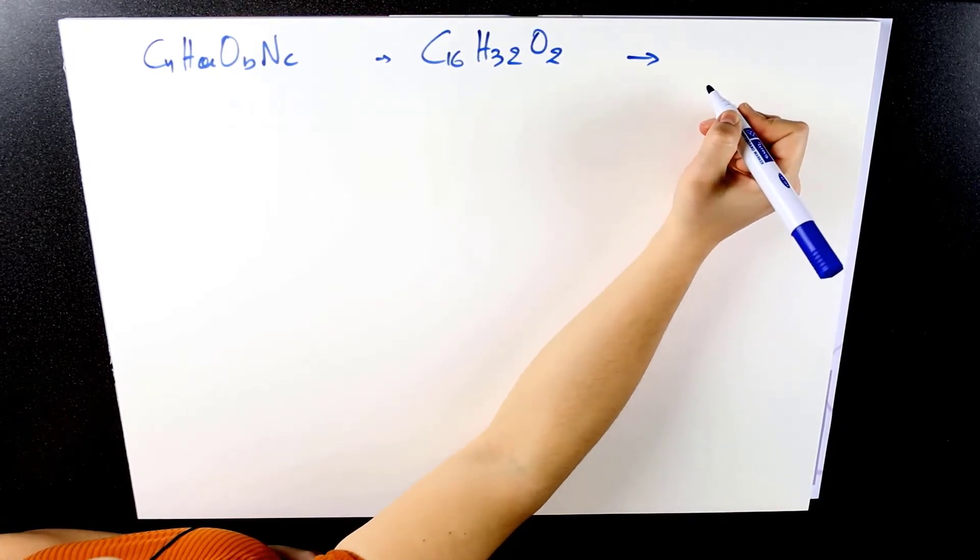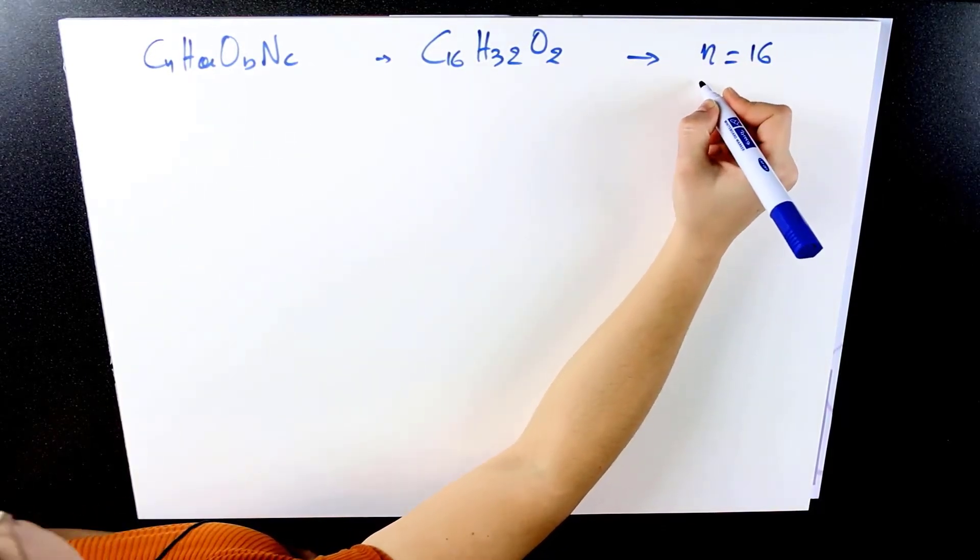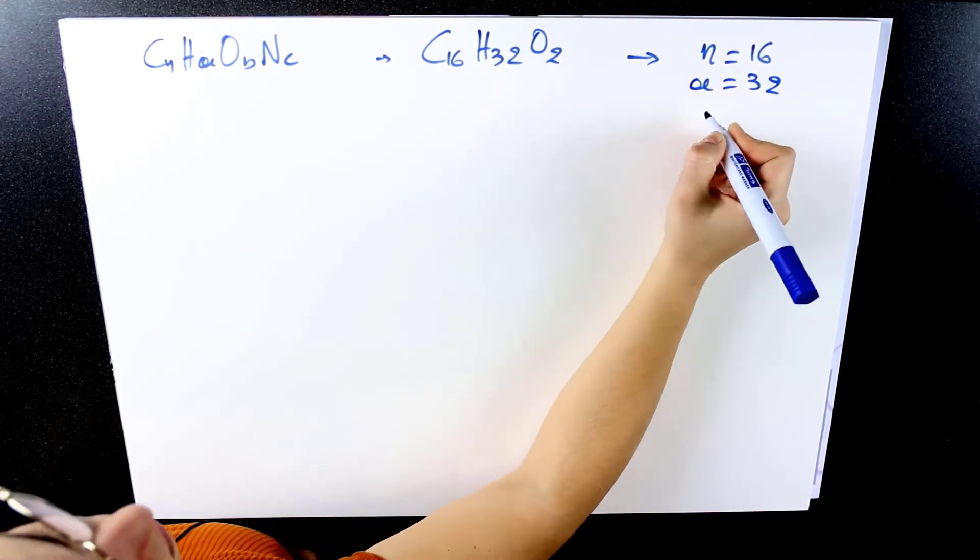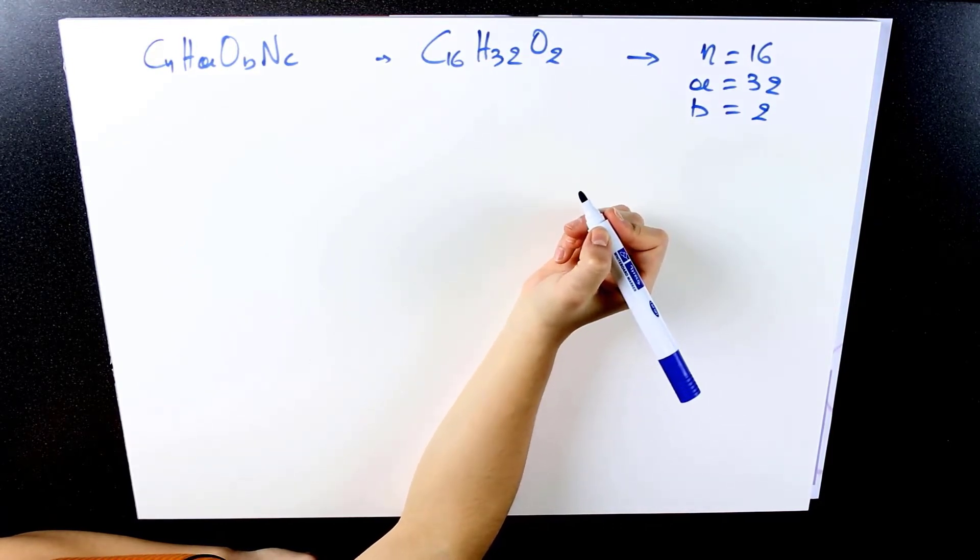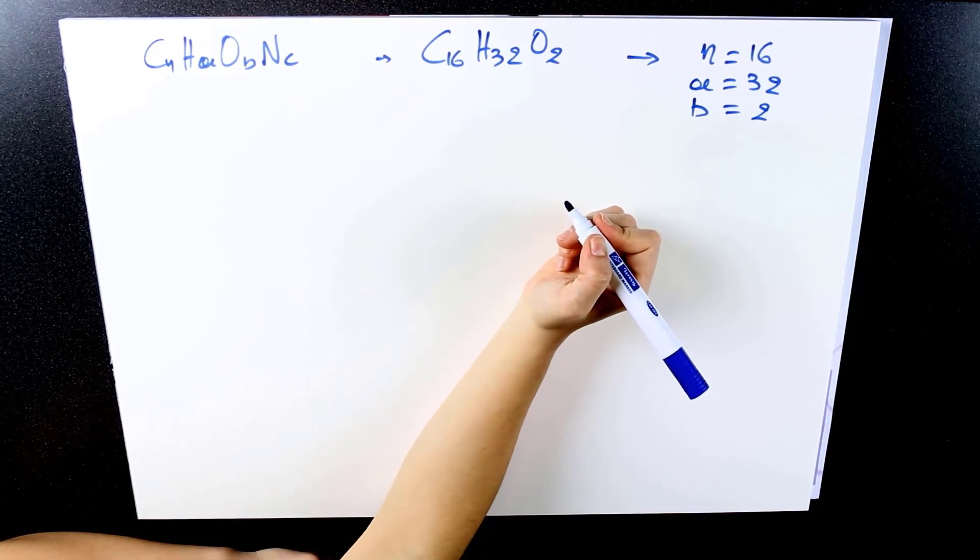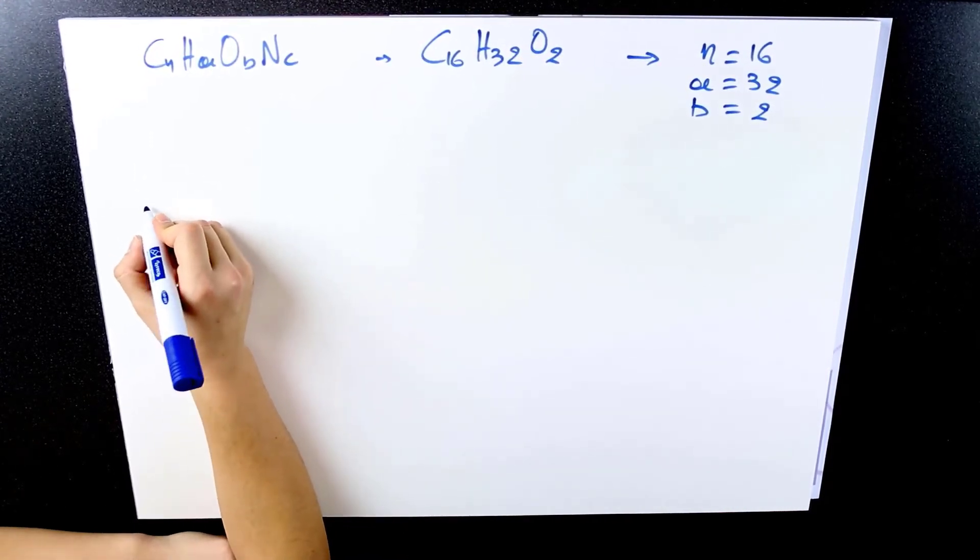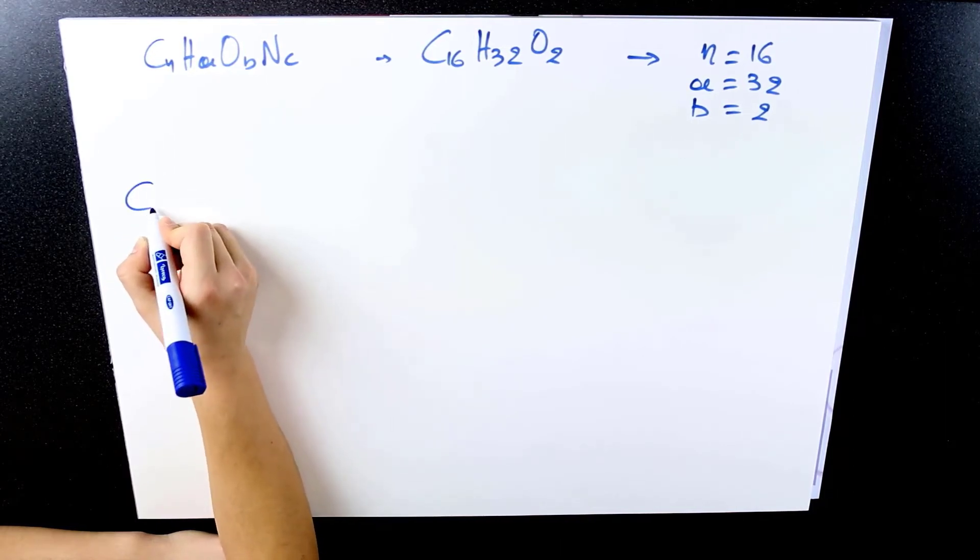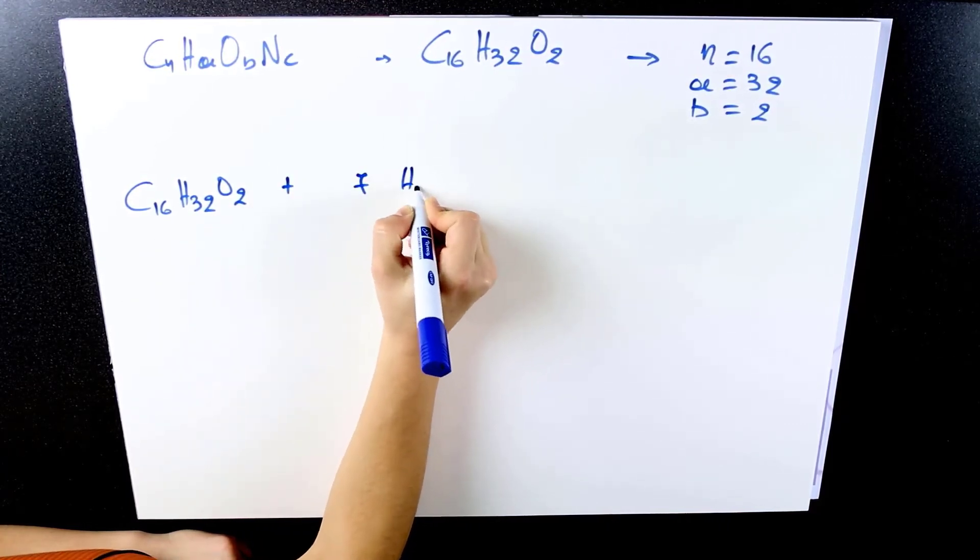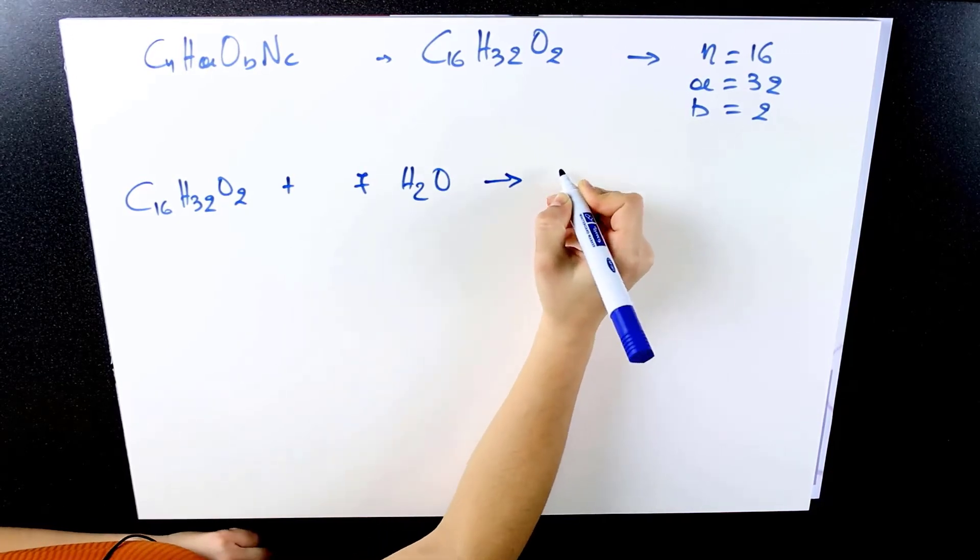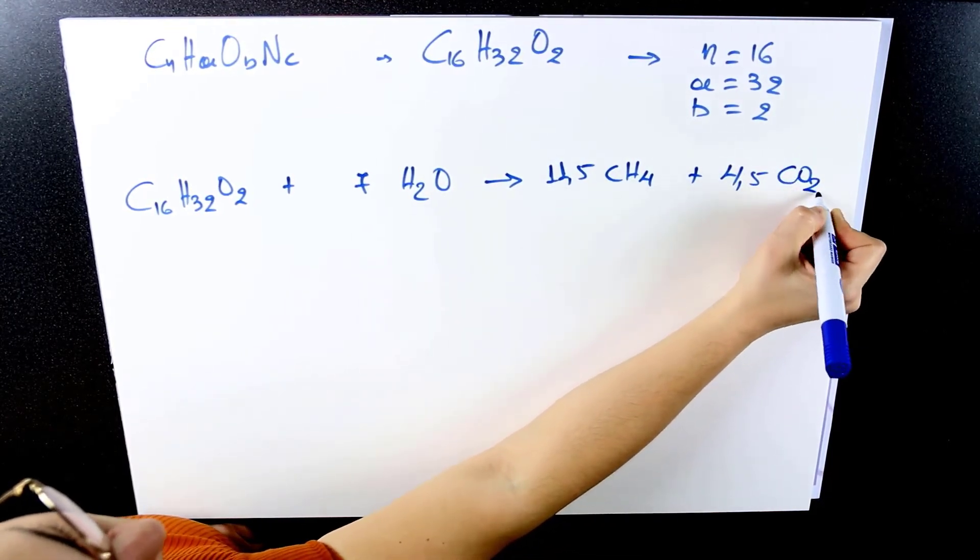In this case, we add to the Buswell equation the parameters N equals 16, A equals 32, and B equals 2. We don't have any nitrogen in palmitic acid, so wherever you see C in the Buswell equation, you just add a zero. The general reaction for the production of biogas from palmitic acid will be 1 mole of palmitic acid reacts with 7 moles of water to produce 11.5 moles of methane and 4.5 moles of carbon dioxide.